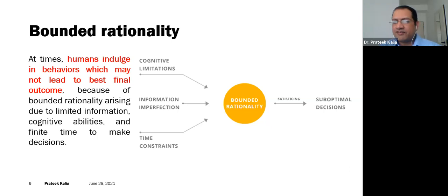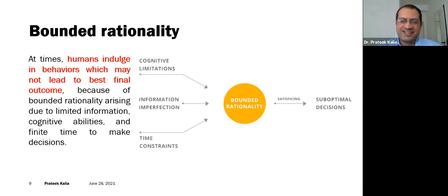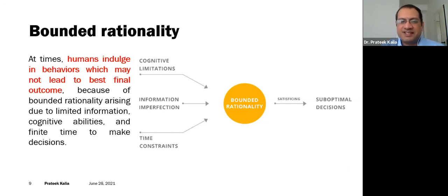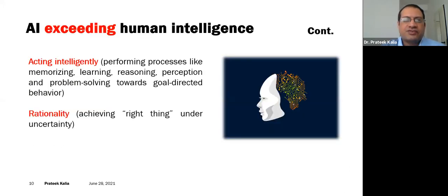Whatever you have to do, you have to make a decision in limited time. For example, students appear for examinations — they have three hours to write their exam within that time. So within that constraint you have to make decisions, and as a result we sometimes make sub-optimal decisions. But in the case of artificial intelligence exceeding human intelligence, these constraints do not apply.